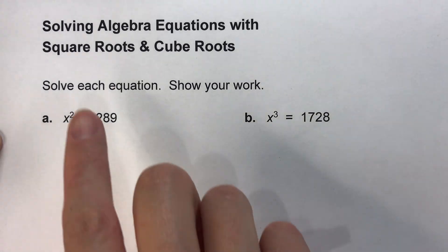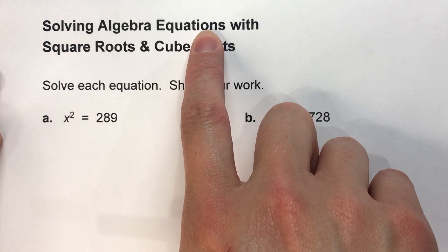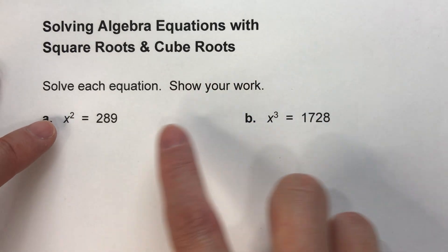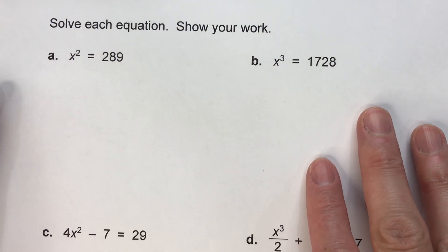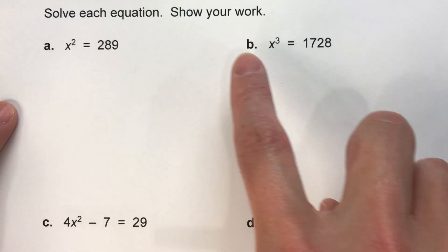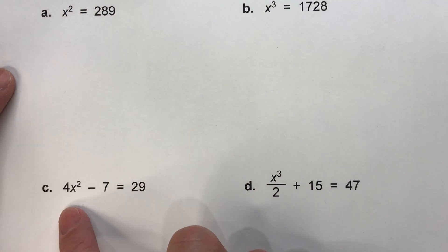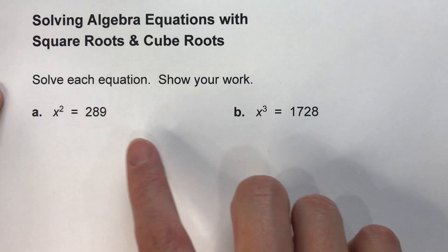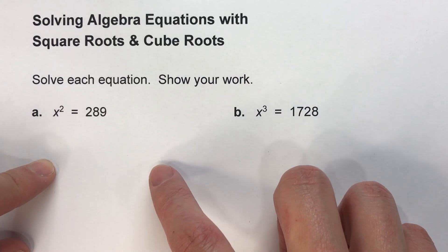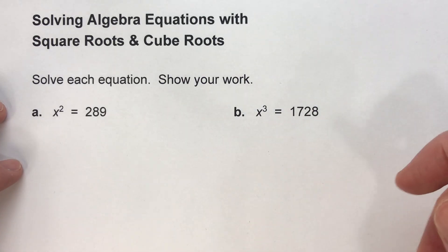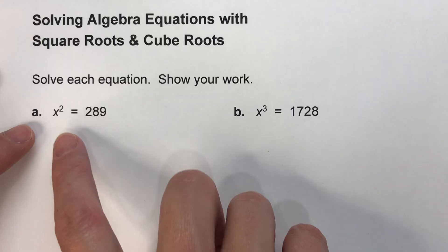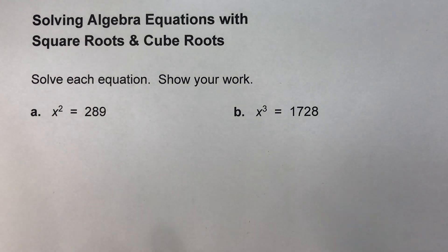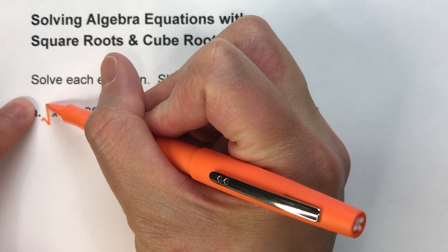Today we are solving algebra equations with square roots and cube roots. The equations we're going to look at all involve x squared and x cubed. Just like undoing multiplying uses division and undoing adding uses subtraction, to undo x squared we have to use the square root.